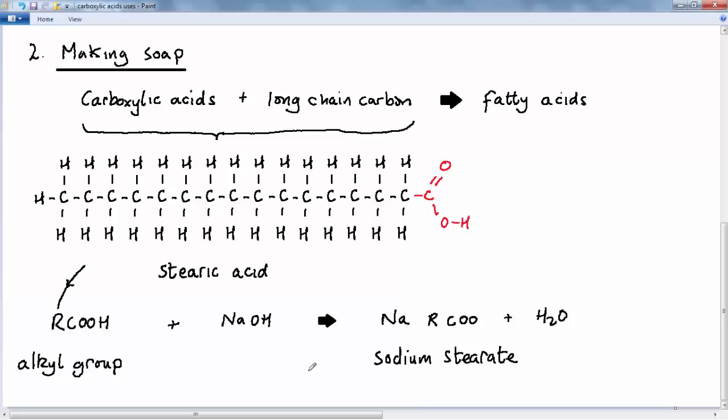So this is a very simplistic description and the manufacturing process is a lot more complicated than this but we don't need to go into that. So what you really need to know is that carboxylic acids with long chains are called fatty acids. These are then reacted with sodium hydroxide to produce sodium stearate which is then used to manufacture soap.